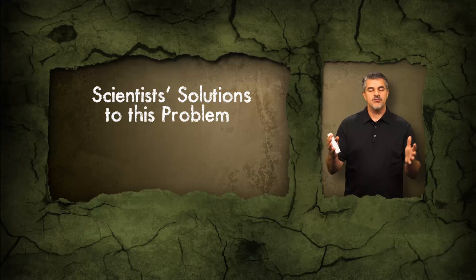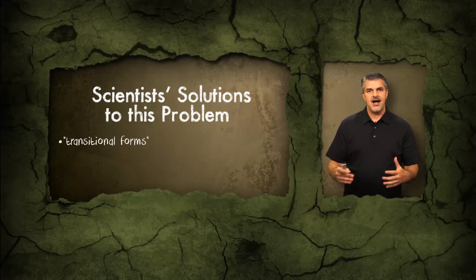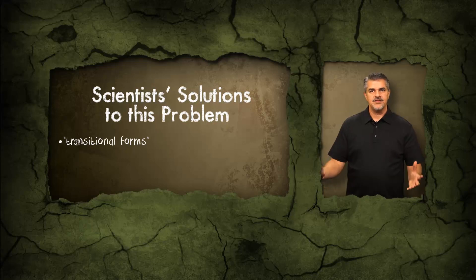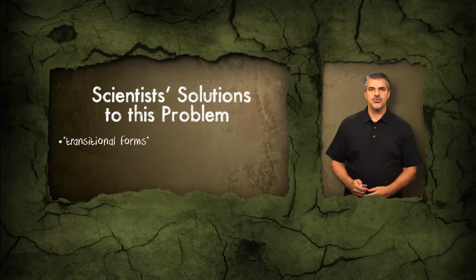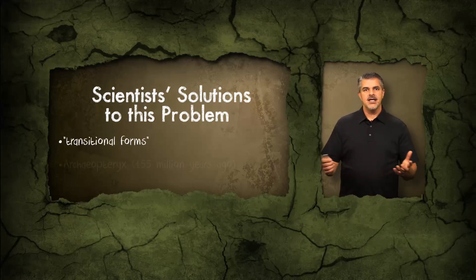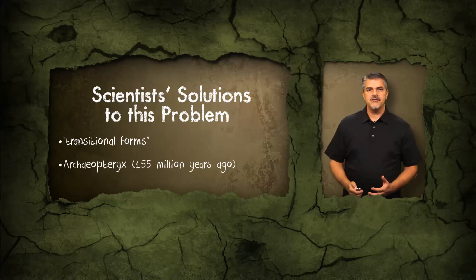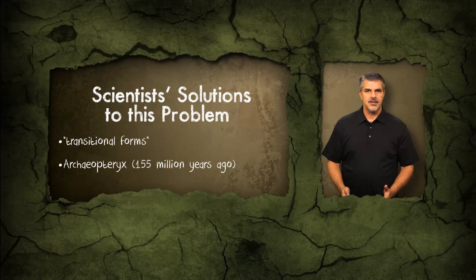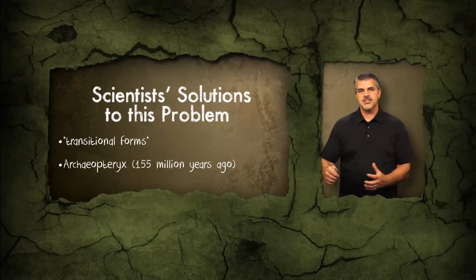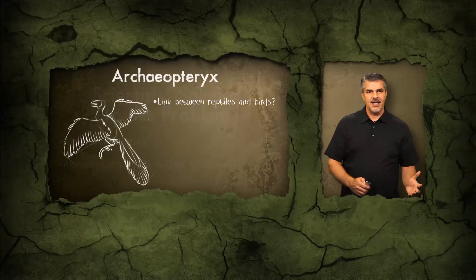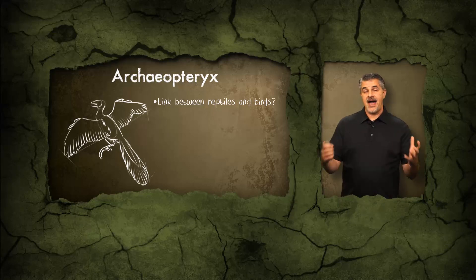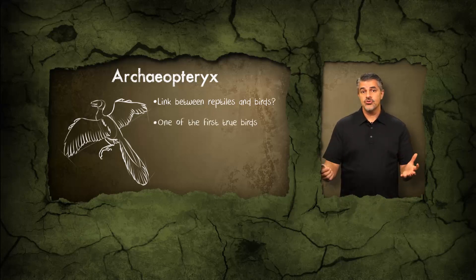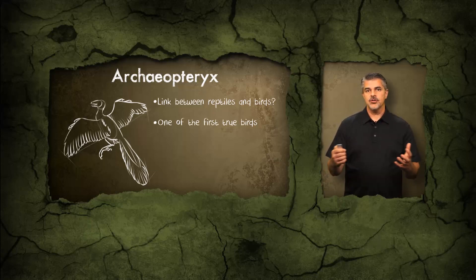Evolutionary biologists point to a few instances of what appear to be transitional forms to justify their expectation that life's history can be explained by biological evolution. One of these classic transitional forms that scientists like to point to is Archaeopteryx, which appears about 155 million years ago in the fossil record. Many people argue that Archaeopteryx appears to be a midpoint between reptiles and birds. Yet the fact of the matter is, Archaeopteryx is a true bird — an ancient bird — and it belongs to a group known as the Archaeopteryx.